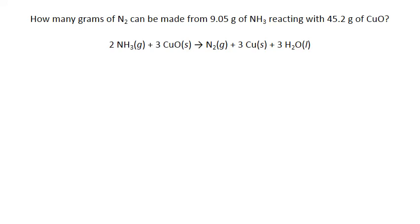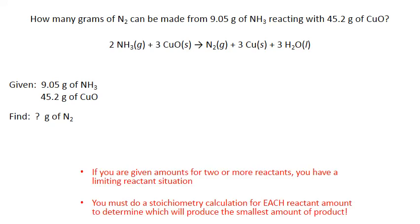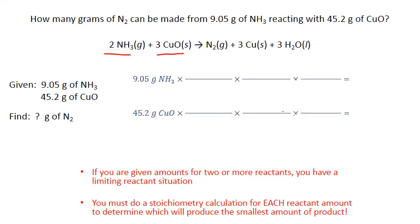Here's another example. How many grams of nitrogen gas, N2, can be made from 9.05 grams of ammonia gas reacting with 45.2 grams of copper oxide? We're given starting amounts in grams, but this is still a limiting reactant situation because amounts are given for two reactants — both ammonia and copper oxide are on the left-hand side. We must do a stoichiometry calculation for each reactant, converting from grams of each reactant into grams of our product, making these mass-to-mass stoichiometry conversions.